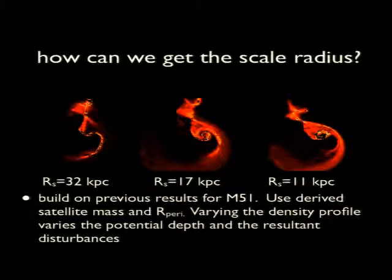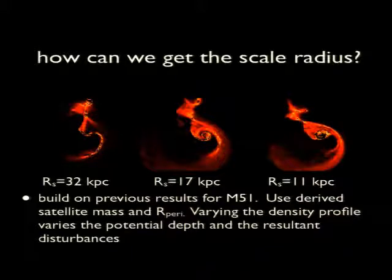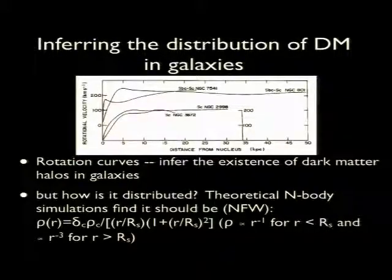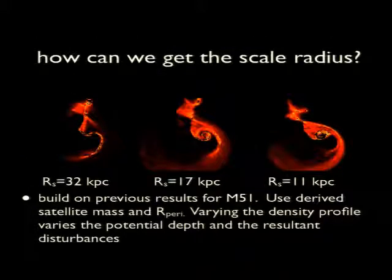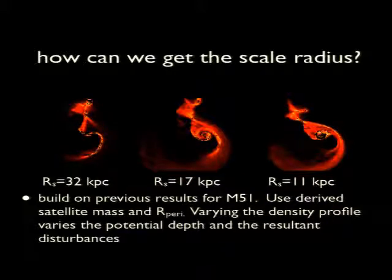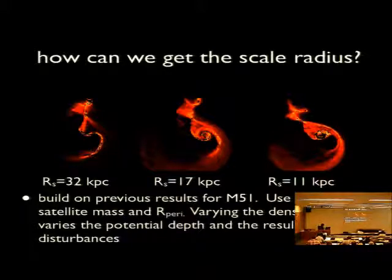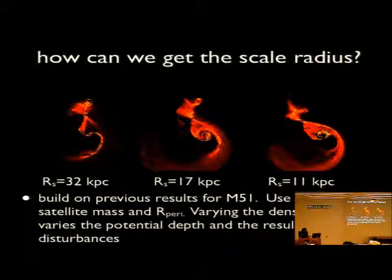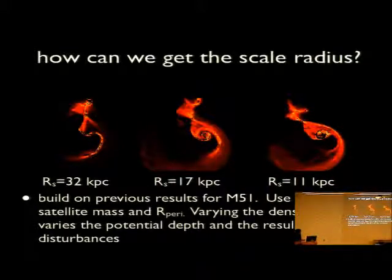This sequence of images shows cases where I varied the scale radius from a large value of 32 to an intermediate value to a low value. The scale radius you use affects the density profile, which dramatically affects the resultant disturbances because it affects the potential depth of the halo. If you have a very large scale radius, the density follows the shallow r to the minus 1 profile all the way out to the extent of the H1 disk. If you have a low scale radius, it switches over to the steeper profile, and steeper density profiles are more effective at holding on to their material, producing more tightly wrapped spiral patterns than shallow density profiles.